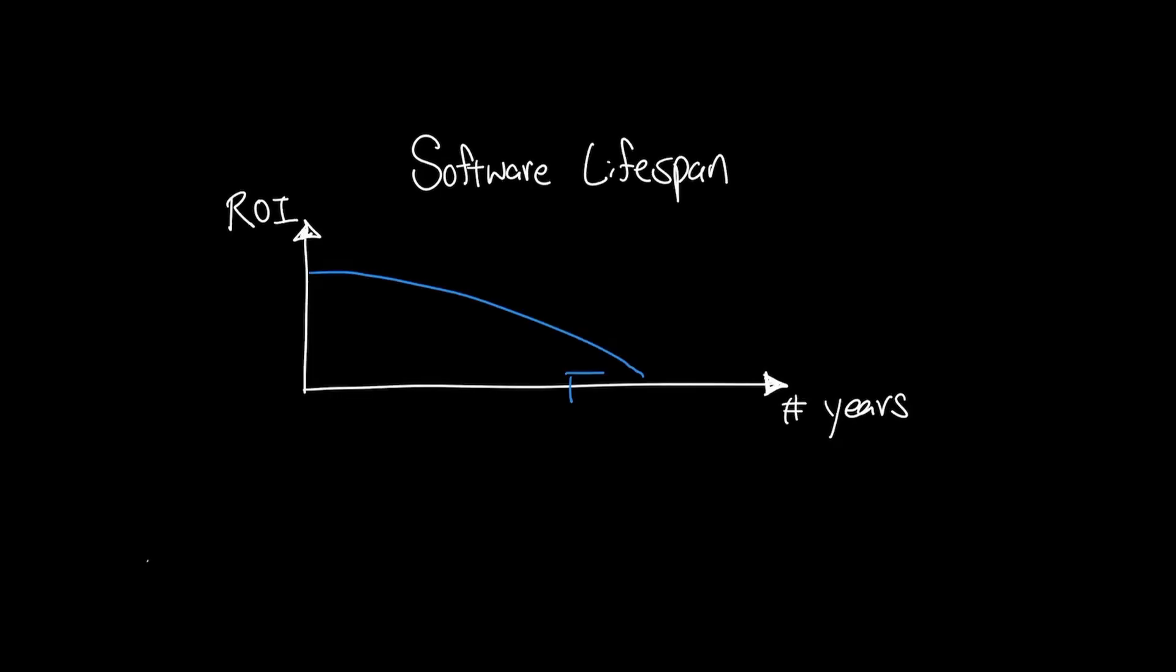On average, software has a lifespan of 6 to 8 years, and with AI, we can see a drastic shrink in the software lifespan, but it's not as bad as you think it is.